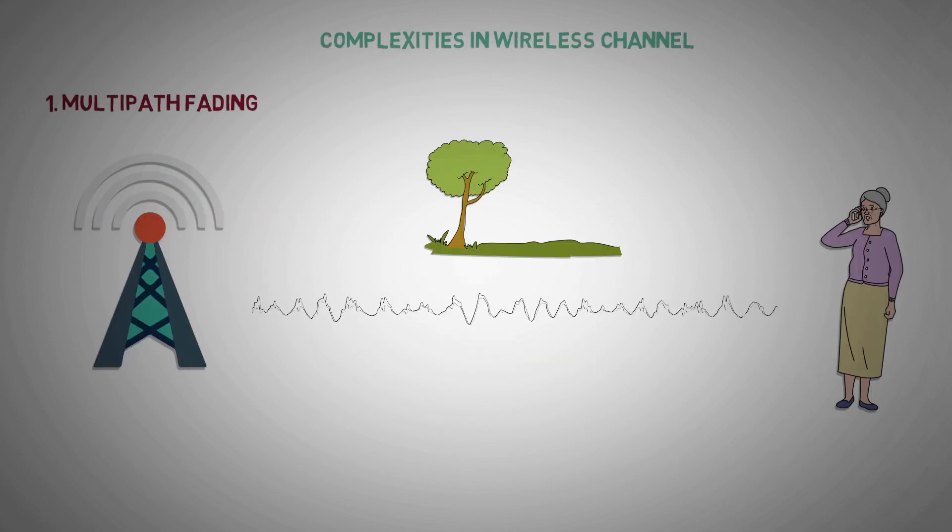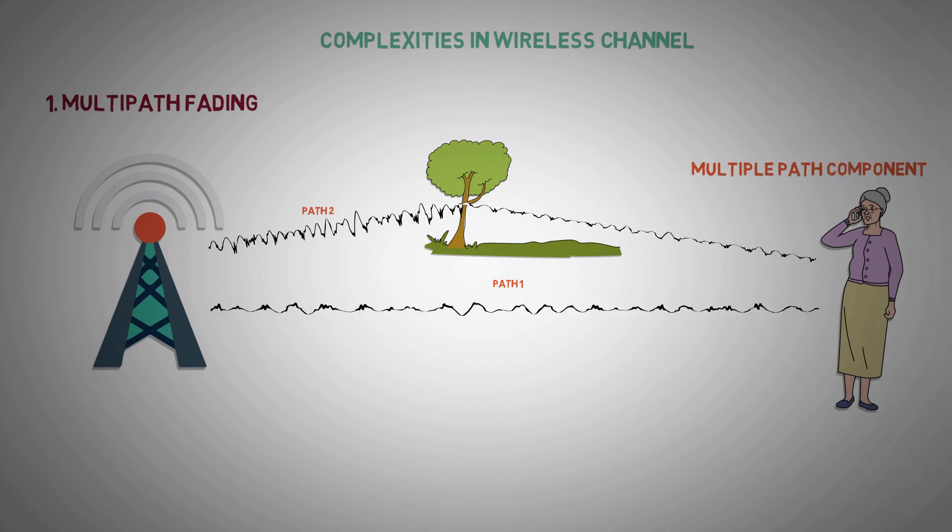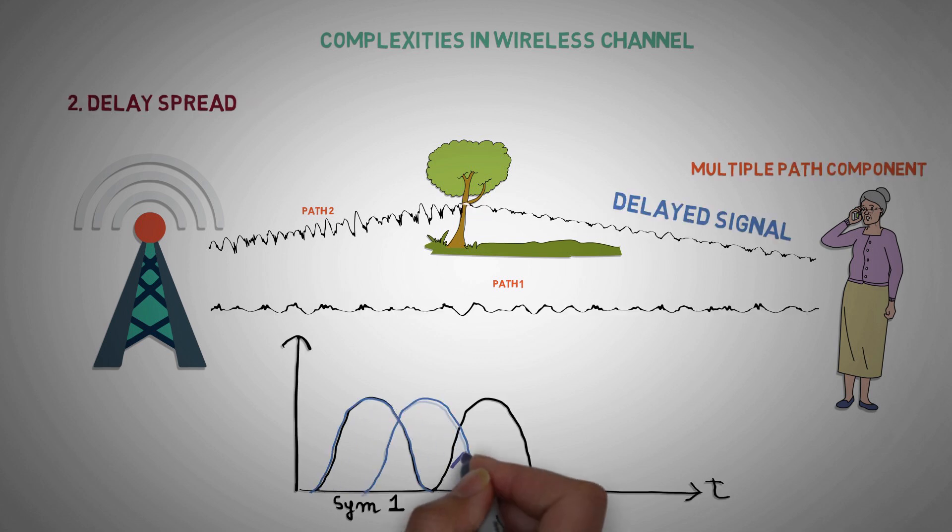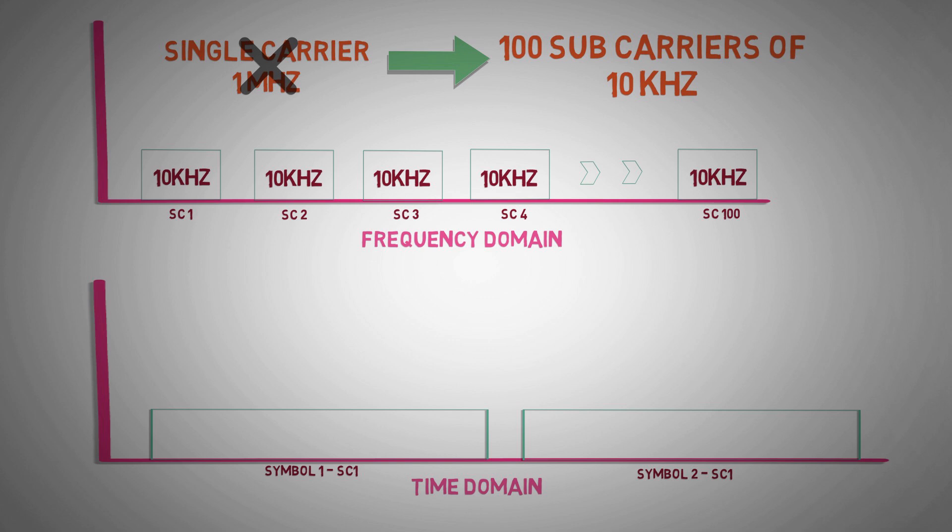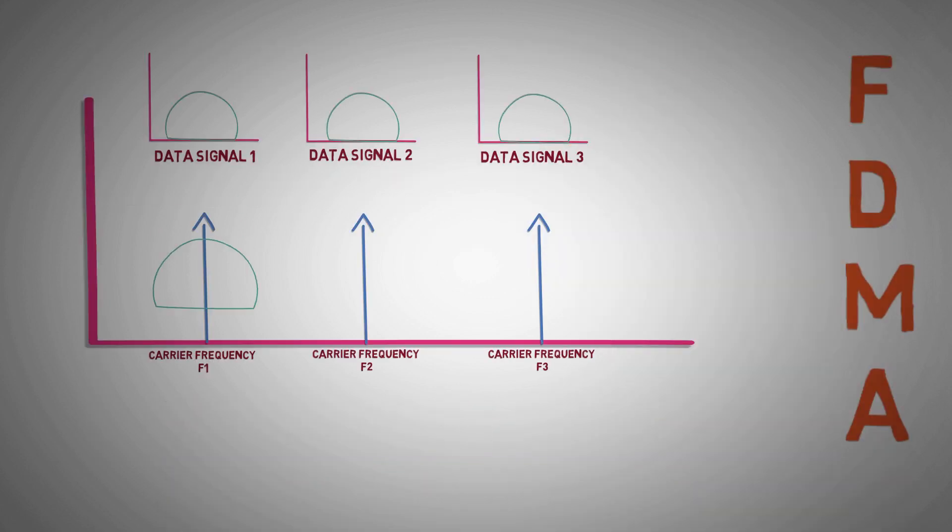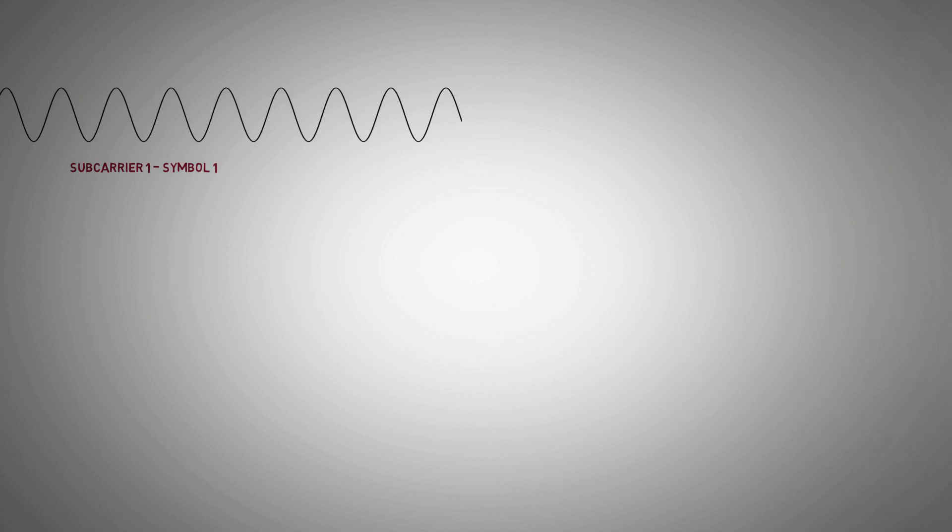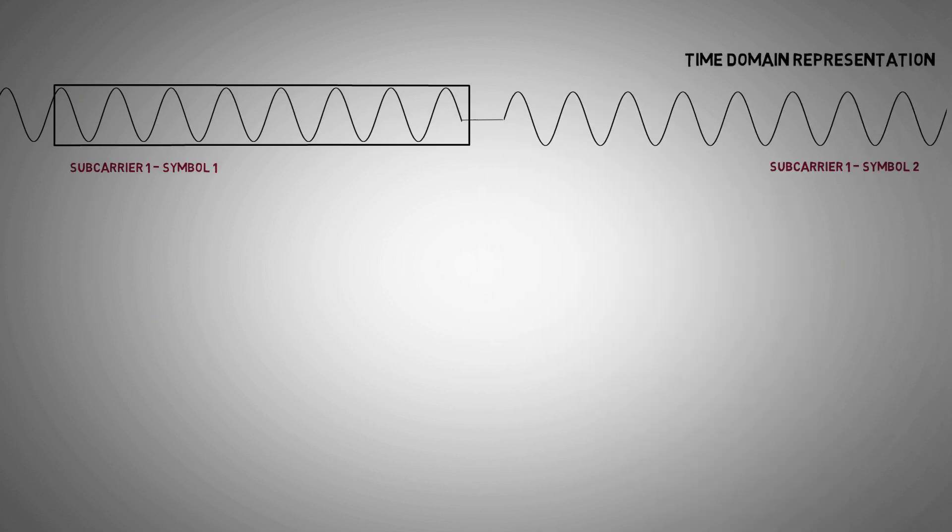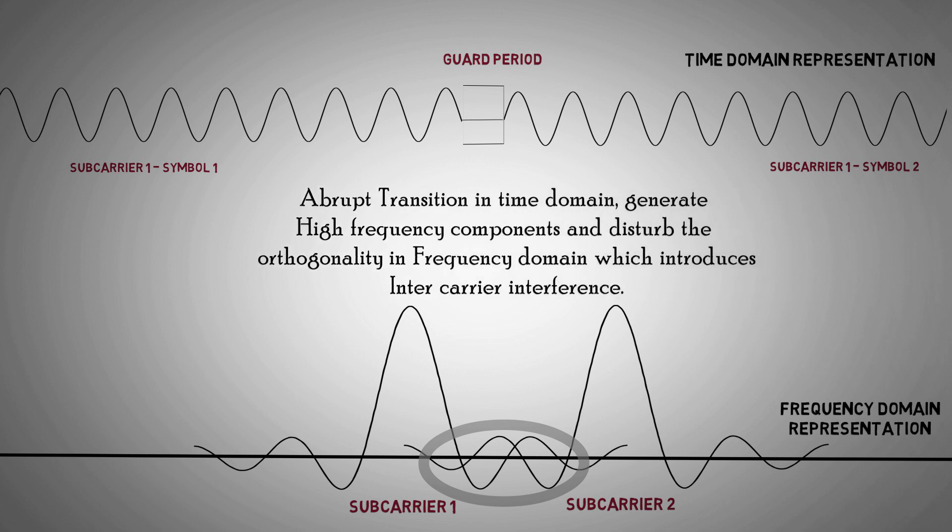Previously we have shown, in wireless channel due to multipath propagation, we face delay spread and inter-symbol interference. We have also discussed how its effect can be reduced by increasing the symbol duration. Also, how guard periods were used to eliminate it. But abrupt changes in time domain during transition from symbol to guard period causes inter-carrier interference in frequency domain, and disturbs the orthogonality between subcarriers.